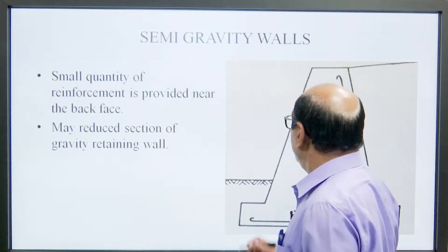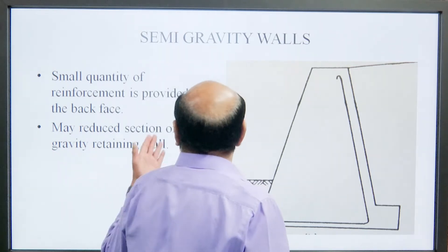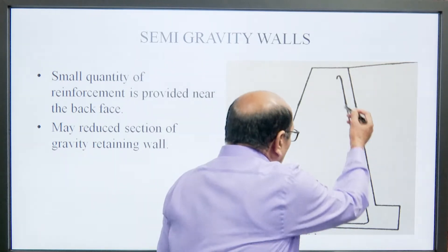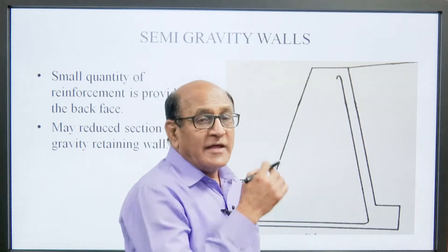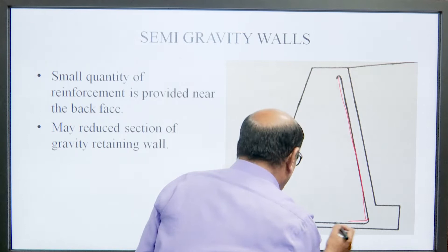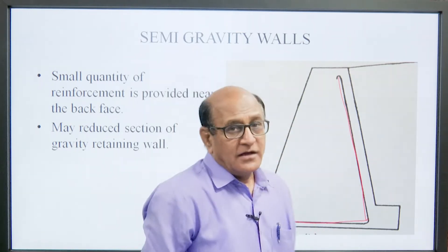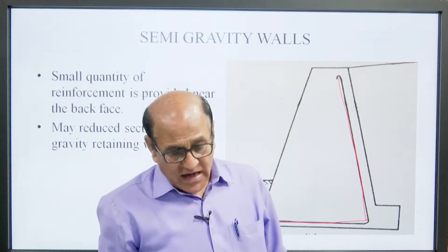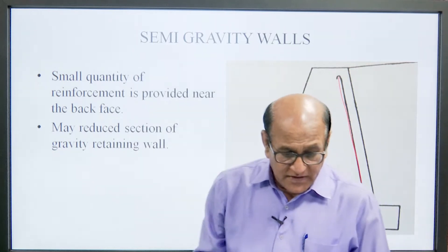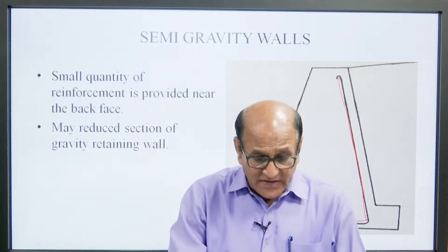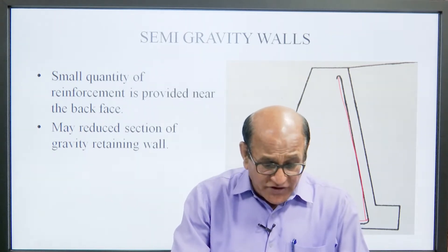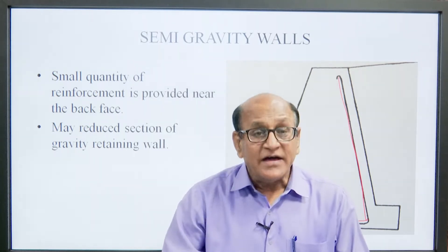Semi-gravity wall: a small quantity of reinforcement is provided near the back face, which may reduce the section of the gravity retaining wall. The reinforcement is placed in the gravity wall, so it is called a semi-gravity wall.